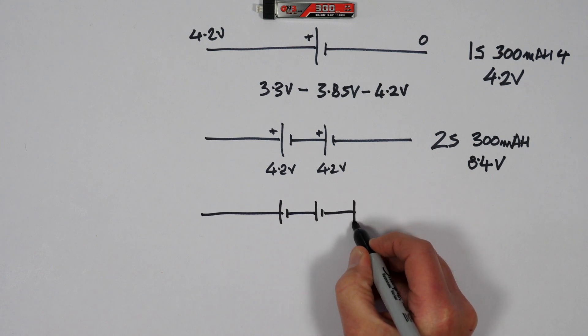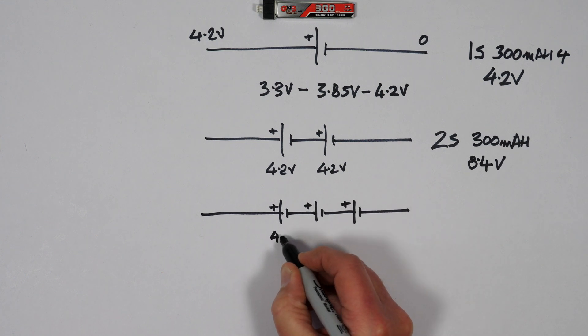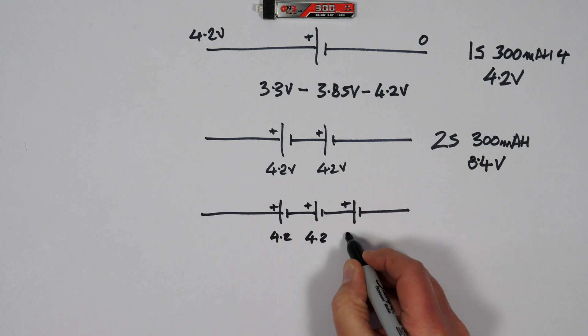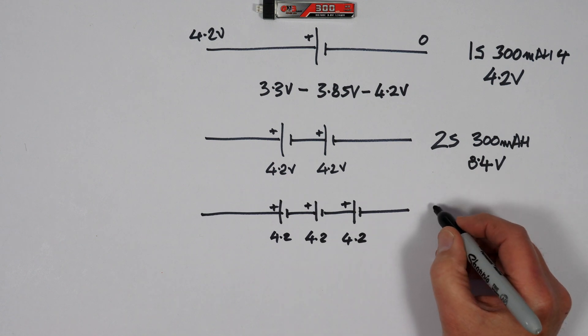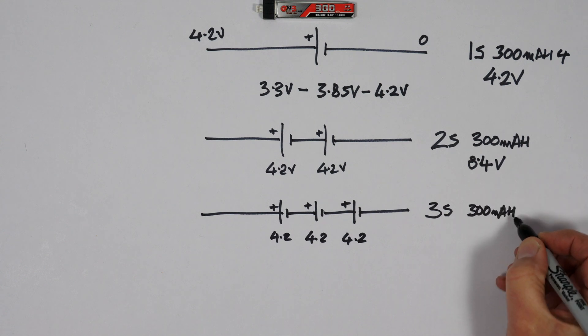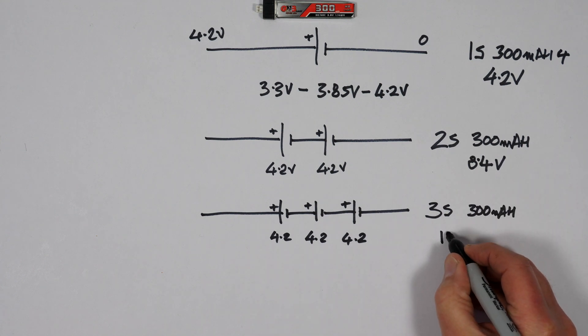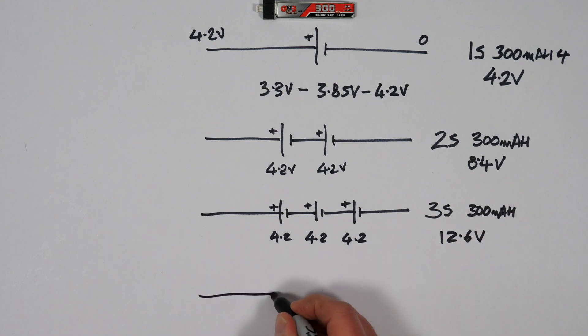3S—you can see where this is going. Positive, positive, positive. 4.2, 4.2, 4.2. That is 3S. Again, it's still 300mAh capacity, but this time it's 12.6V. You just add those together. And 4S, lo and behold, is 4 times 4.2V.